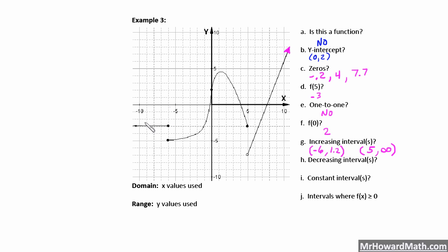Decreasing: the graph starts to decrease at 1.2 — that's where it stopped increasing — and decreases all the way down to 5. We'll put parentheses around both because it's undefined right at those points as to whether it's increasing or decreasing. So the decreasing interval is (1.2, 5). Note: just because it stops increasing doesn't mean it has to start decreasing — it could also go constant — but in this case it does decrease.